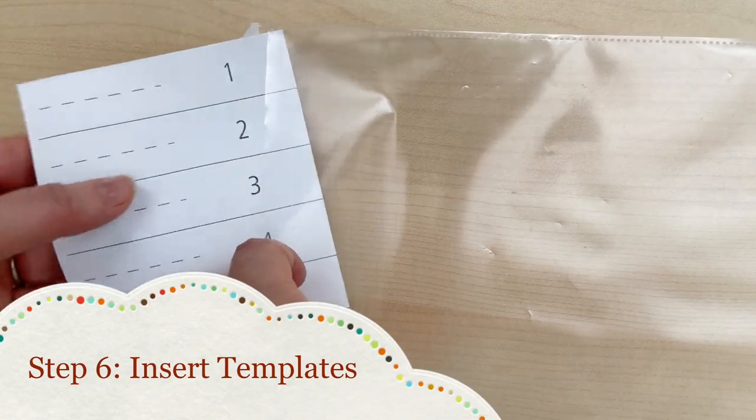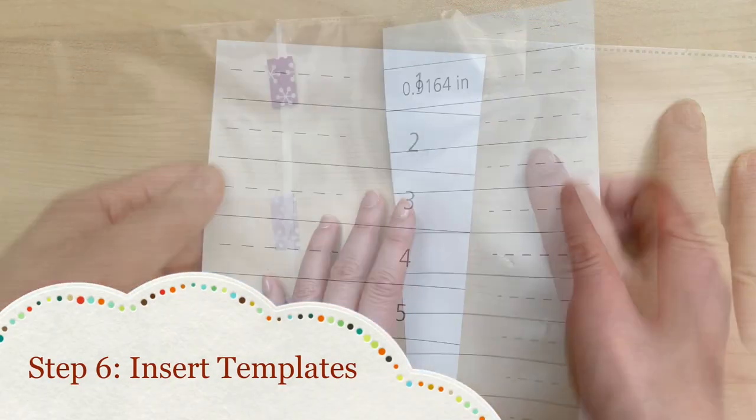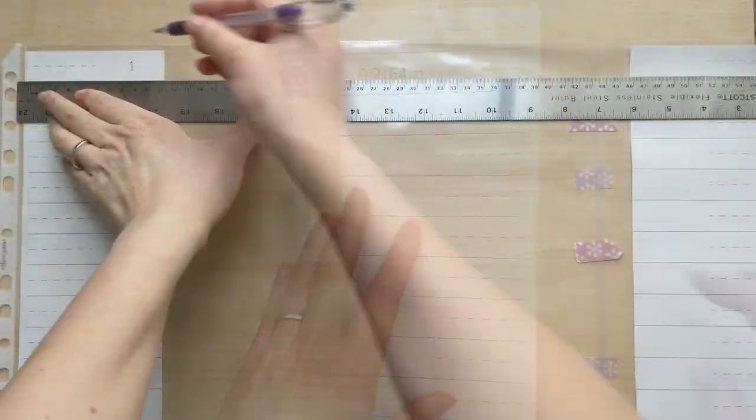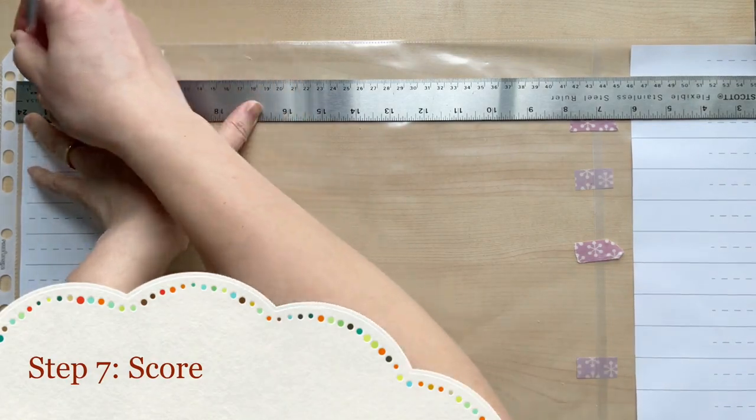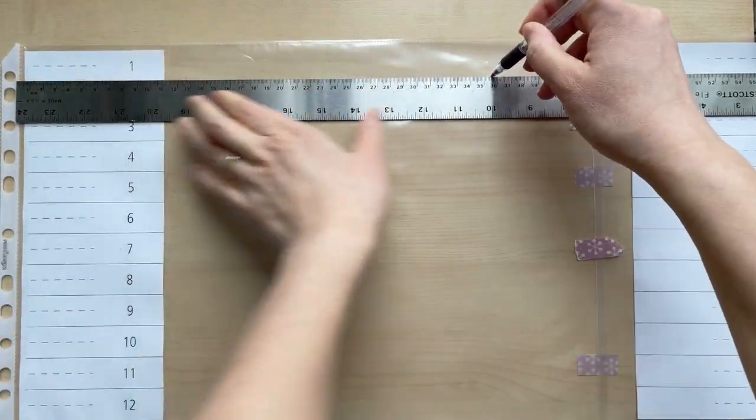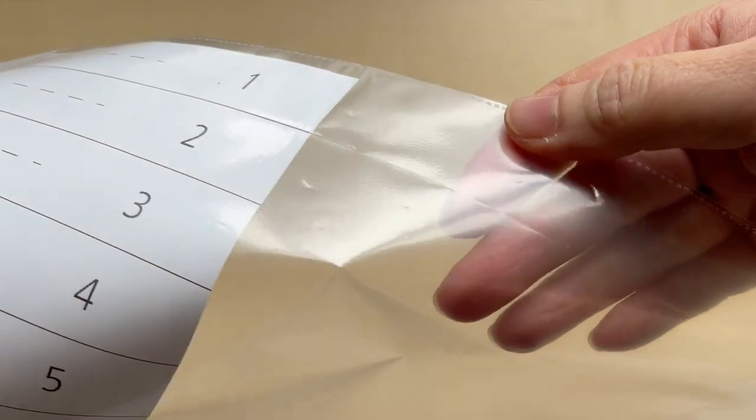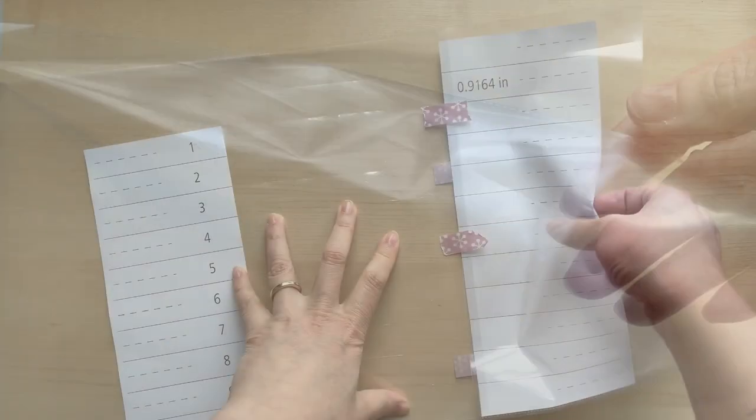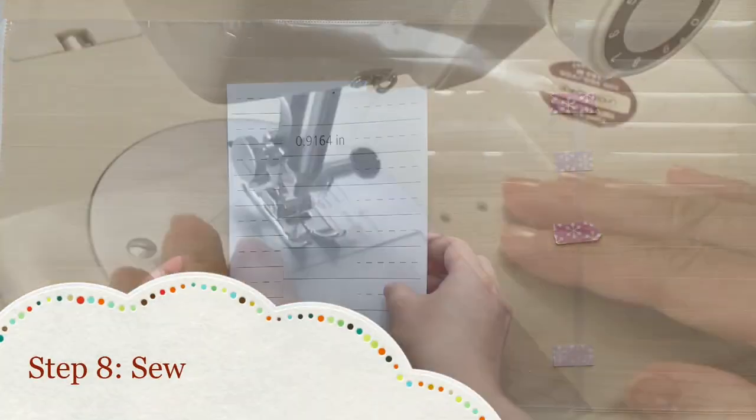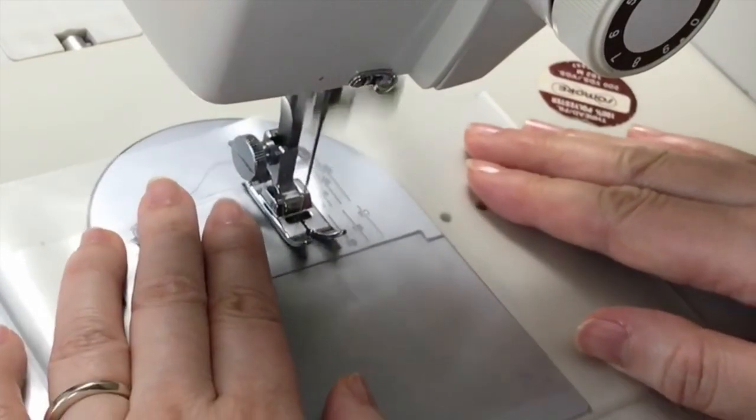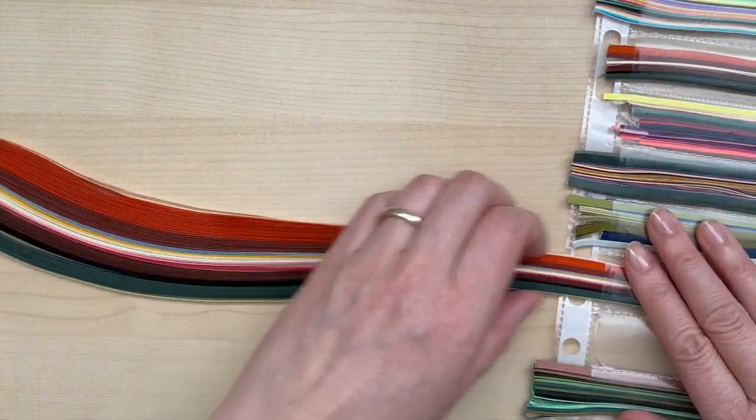Step six, slip the template halves on either side of the sheet protector. Step seven, use a ruler and scoring tool to trace along the template, leaving an indentation in the plastic. Step eight, remove the template and sew along the score lines. Now you're ready to tidy up your supplies.